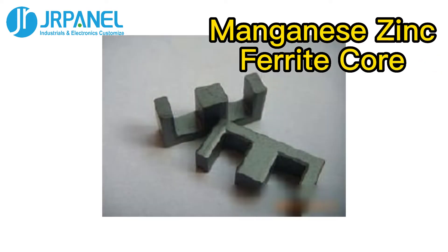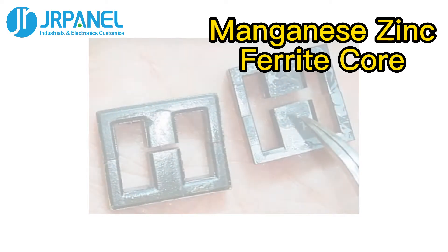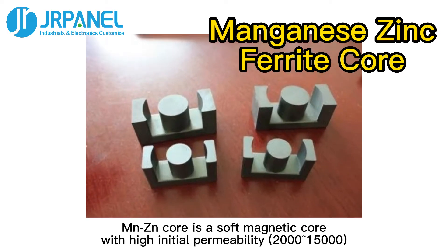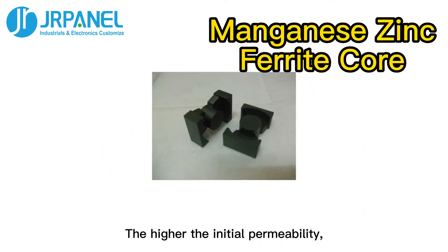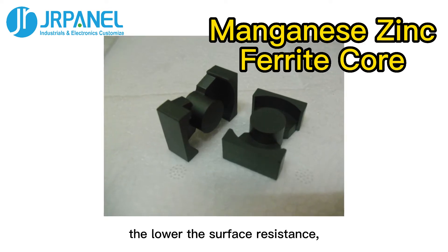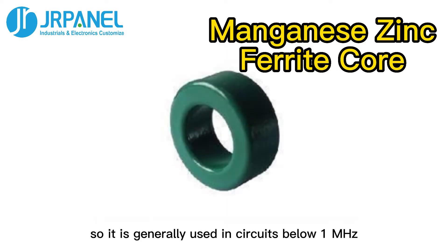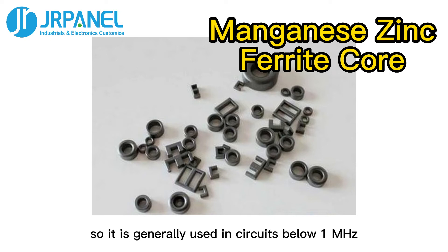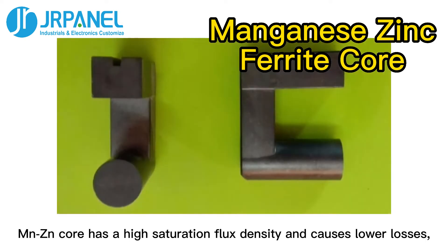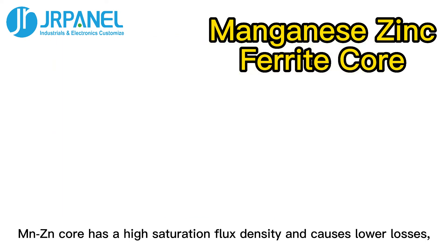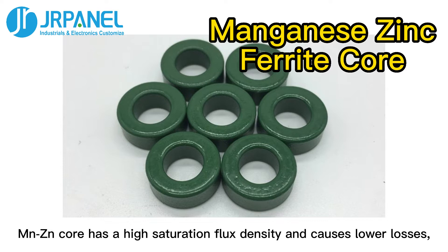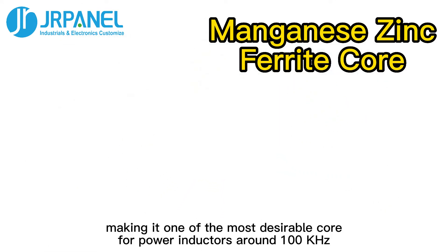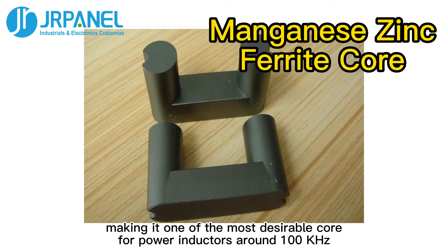First, manganese zinc ferrite core. MnZn core is a soft magnetic core with high initial permeability. The higher the initial permeability, the lower the surface resistance, so it is generally used in circuits below 1 MHz. MnZn core has a high saturation flux density and causes lower losses, making it one of the most desirable cores for power inductors around 100 kHz.